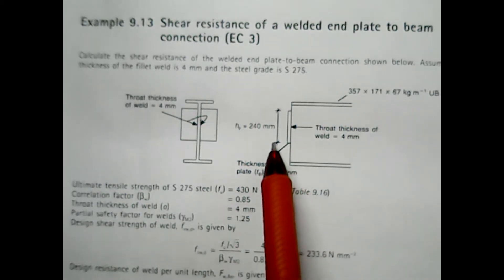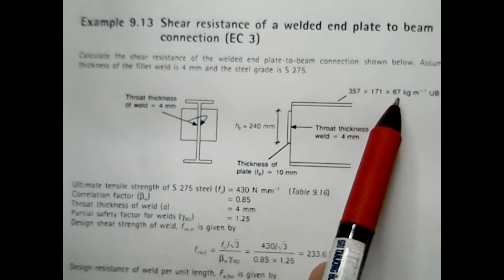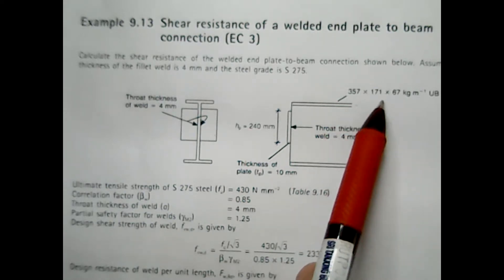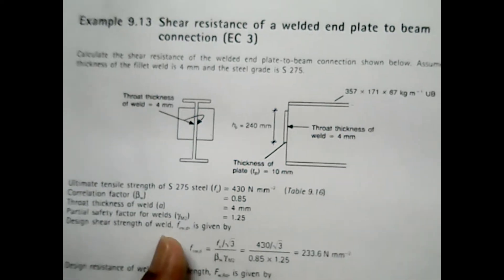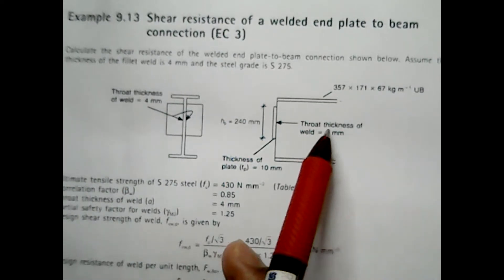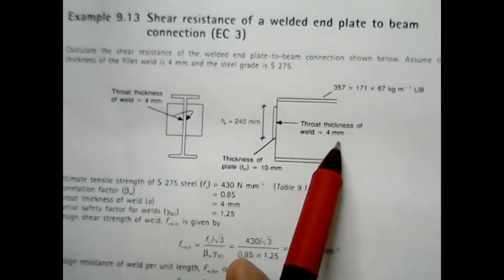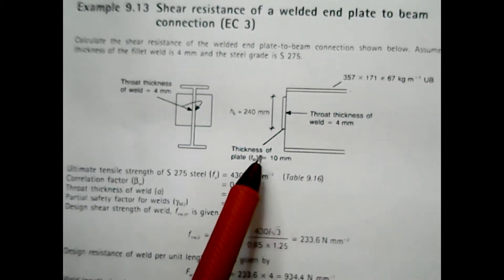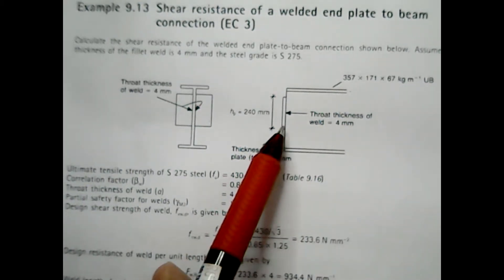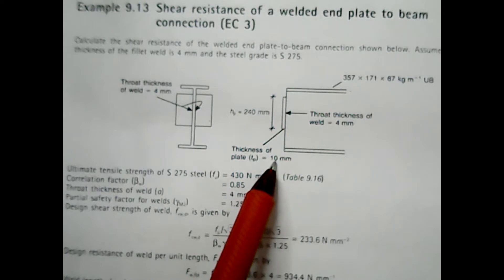Given that your height of plate is 240 and the beam is given as 357 with the throat thickness of weld which is 4mm. The thickness of plate is 10mm.